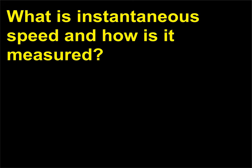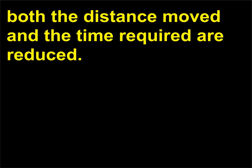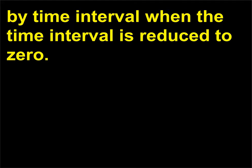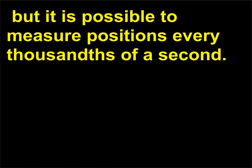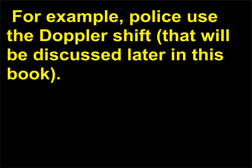What is instantaneous speed and how is it measured? If you reduce the time interval between measurements of position, both the distance moved and the time required are reduced. If the speed is constant, then the ratio of the two does not change. Instantaneous speed is defined as the limit of distance divided by the time interval when the time interval is reduced to zero. In practice you can't reach the limit, but it is possible to measure positions every thousandth of a second. There are indirect methods of measuring instantaneous speed — for example, police use the Doppler shift.